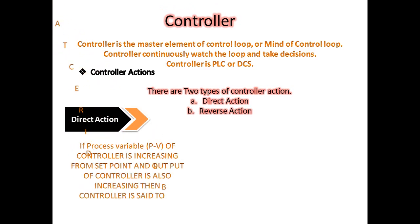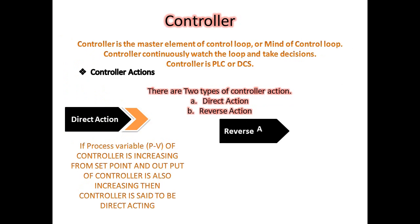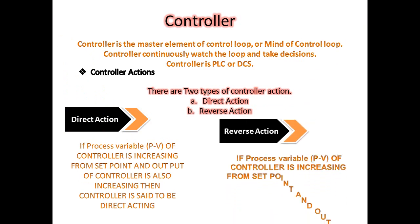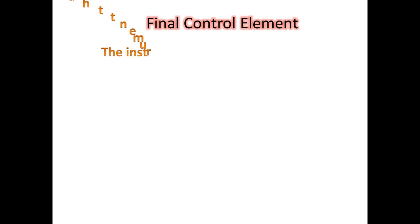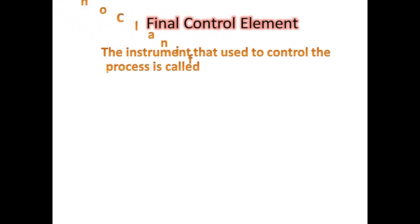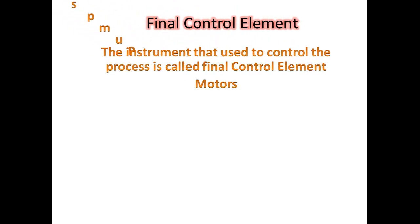In direct action, if the process variable of the controller increases from the setpoint and the output of the controller also increases, then the controller is said to be direct acting. In reverse action, the controller is said to be reverse acting when the output responds in the opposite direction to the process variable.